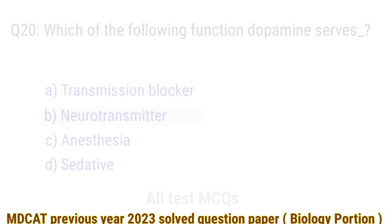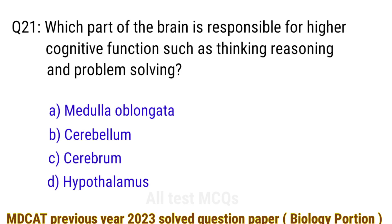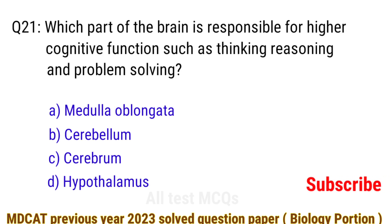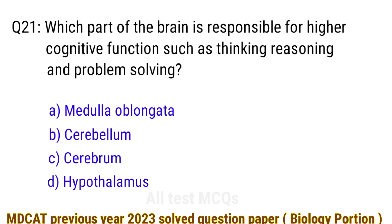Question number 21. Which part of the brain is responsible for higher cognitive functions such as thinking, reasoning, and problem solving? The right answer is option C: cerebrum.